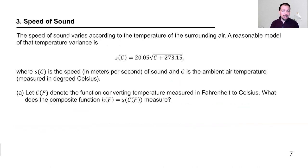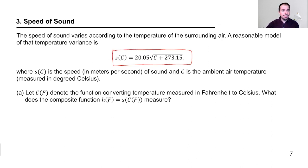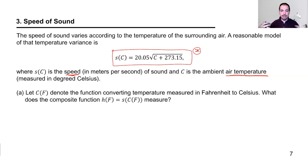Let's talk about a bit of physics. The speed of sound varies according to the temperature of the surrounding air. A reasonable model is S of C — the speed in meters per second — where C is the ambient air temperature in degrees Celsius. Sound is a pressure wave, so it makes sense that surrounding air temperature would affect how fast sound travels.